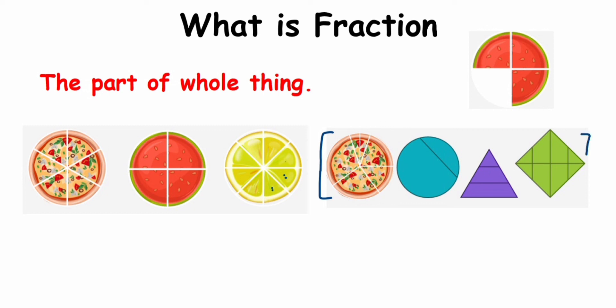Here you can see the watermelon — how much of the watermelon is left. There were four slices of watermelon; out of that, three slices are left, so the fraction becomes three upon four. That's it. I hope it's clear what a fraction is. If you have a question or doubt, you can drop a comment below. Thank you so much for watching.